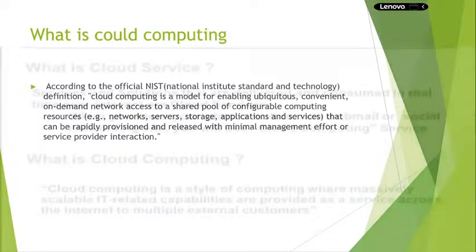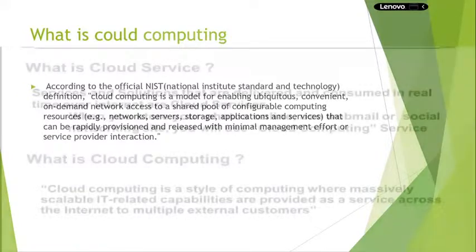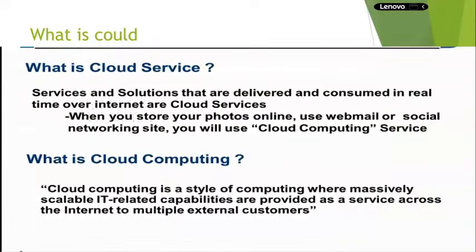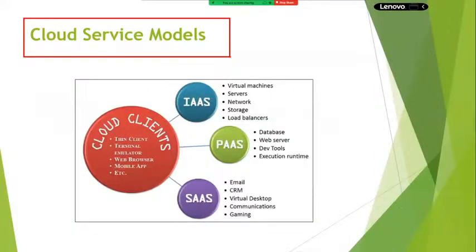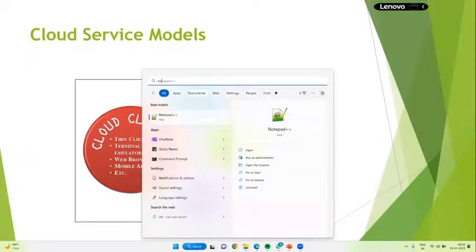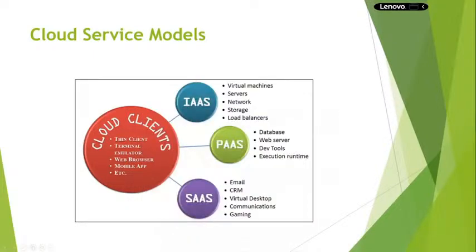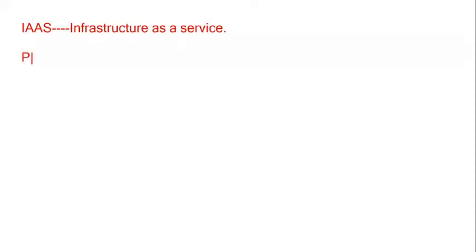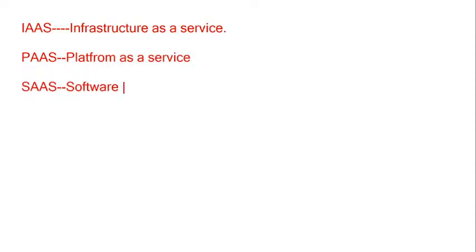In cloud computing, there are three types of service models. One is Infrastructure as a Service (IaaS), Platform as a Service (PaaS), and Software as a Service (SaaS). Why have they categorized it into three different types of cloud service deployment models?